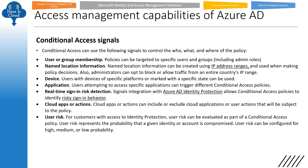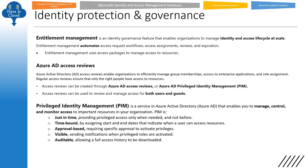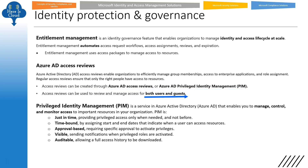Access management capabilities — conditional access signals. You need to cram what those signals are: user or group membership, named location information, devices, application, real-time sign-in and risk detection, cloud apps or actions, and user risk. Entitlement management and its purpose you need to know. Azure AD access reviews ensure only the right people have access to resources — they can be created through Azure AD access reviews or Azure AD Privileged Identity Management (PIM) for both users and guests. PIM is very critical — it's a service in Azure AD that enables you to manage, control, and monitor access to important resources. It is just-in-time, provides prepared access only when needed, is time-bound, approval-based, visible, and auditable.